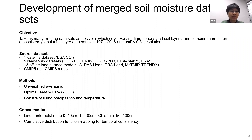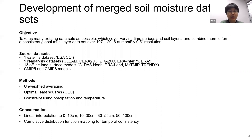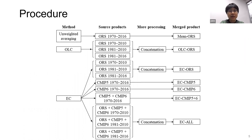We tested different merging methods for these datasets, including weighted averaging and optimal least squares — which derives weights based on observational constraint — as well as an emerging constraint method using precipitation and temperature to correct for the realism of the forcing. Because these source datasets have different soil layer and time coverage, we first interpolated them to four different soil layers, and for time period concatenation we used cumulative distribution function mapping, the same as done on the ESA data.